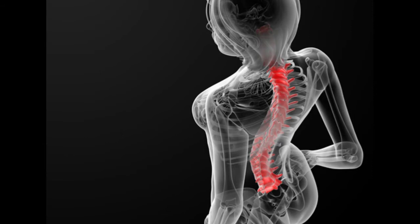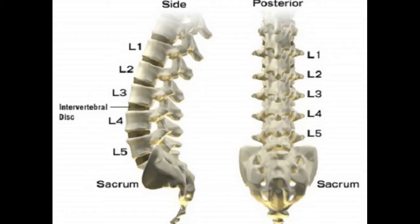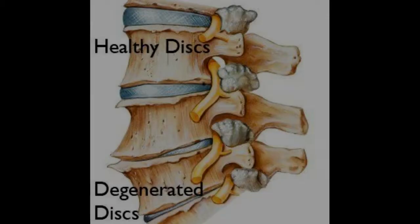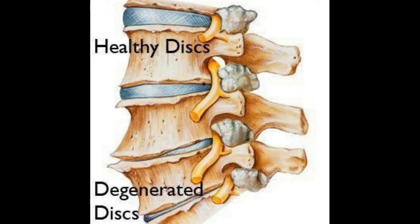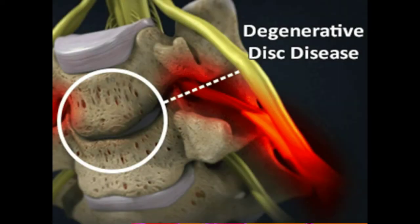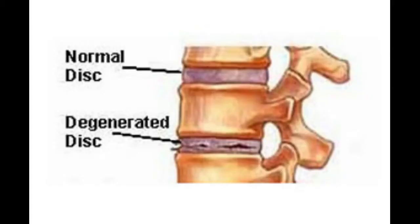As we age, our spinal discs break down or degenerate, which may result in degenerative disc disease. In some people, these age-related changes include the loss of fluid in the discs, which reduces their ability to act as shock absorbers and makes them less flexible. Loss of fluid also makes the disc thinner and narrows the distance between the vertebrae.